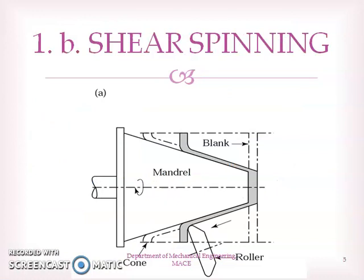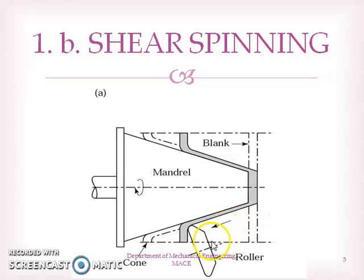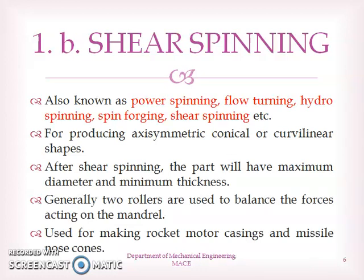The next classification is shear spinning. Shear spinning is also very similar to conventional spinning — it uses a mantle with a circular metal blank pressed against it using a roller. Shear spinning is also known as power spinning, flow turning, hydro spinning, and spin forging.